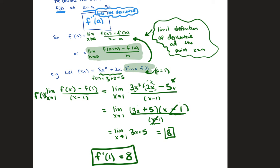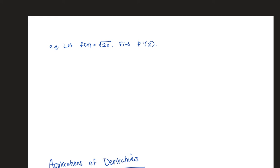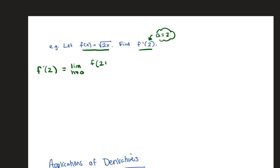Take a moment to review those steps. You could also try this example using the h-definition and should get the same value of 8. For the next example, f(x) equals the square root of 2x and we're asked to find f'(2). Using the h-definition with a equals 2, f'(2) equals the limit as h goes to 0 of f(2+h) minus f(2) all over h, which becomes the limit of [√(2(2+h)) minus √(2·2)] over h, or [√(4+2h) minus √4] over h.